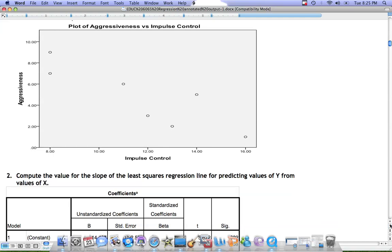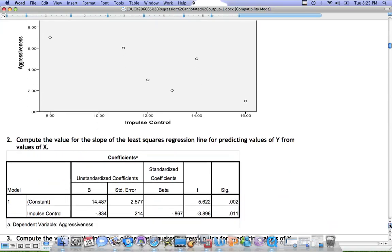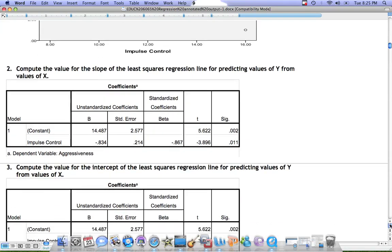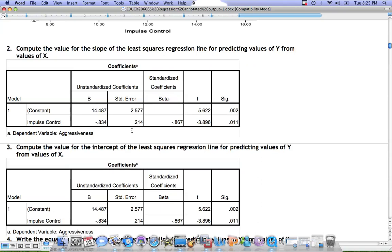If we want to compute the value of the least squares regression line, we need to look at the SPSS output. The SPSS output under the coefficients table provides the slope in the second row and the intercept in the first row.